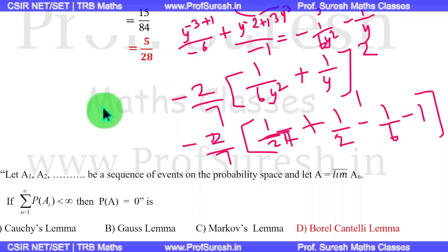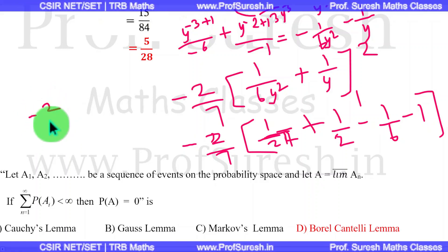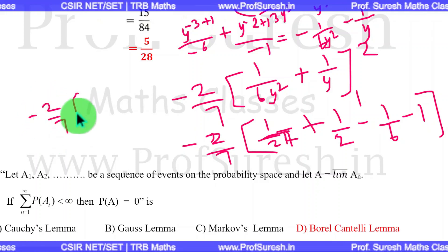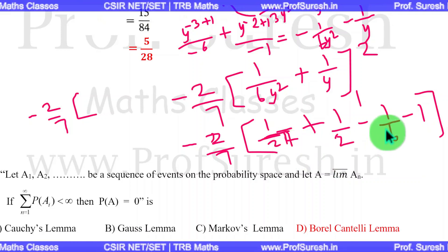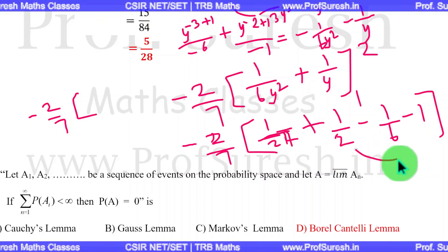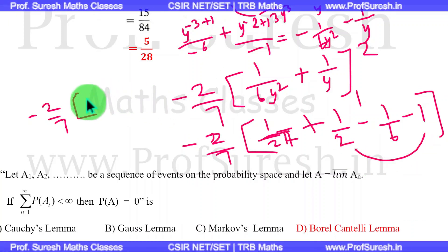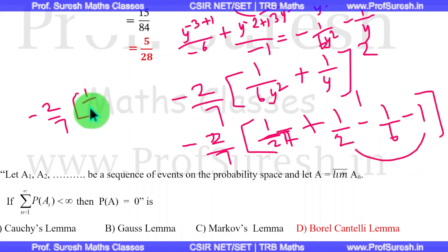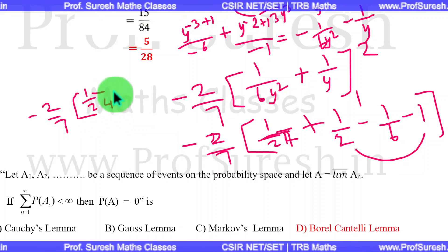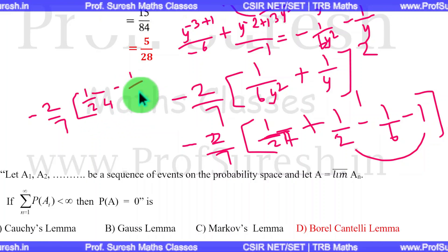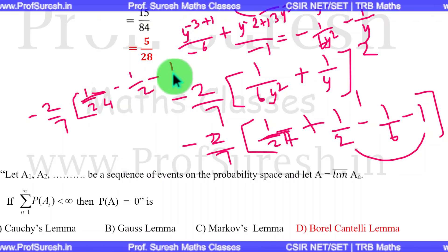The final expression becomes (−2/7) times the bracket. Substituting the limits: upper limit gives 1/24 minus 1/2, and the lower limit gives −1/6 minus 1. After computing, we get: (1/24) − (1/2) − (−1/6) + (−1). Simplifying with minus signs: minus 1/2 and minus 1/6.